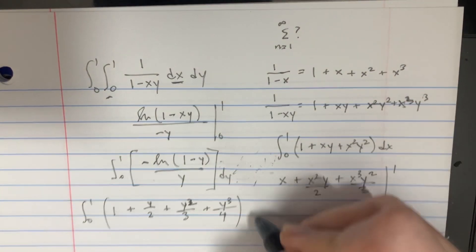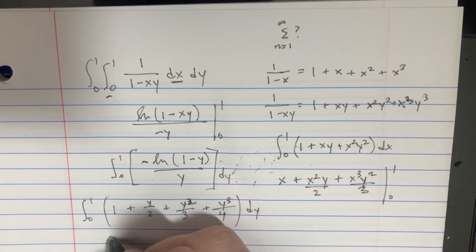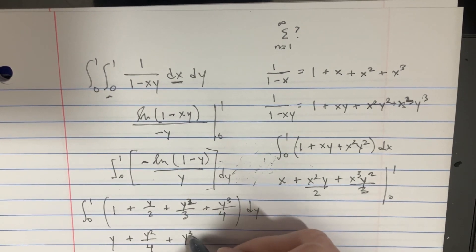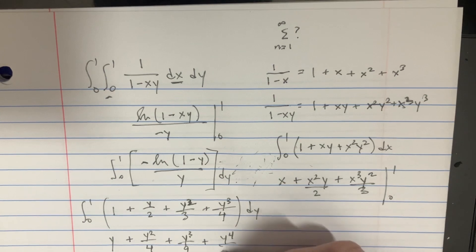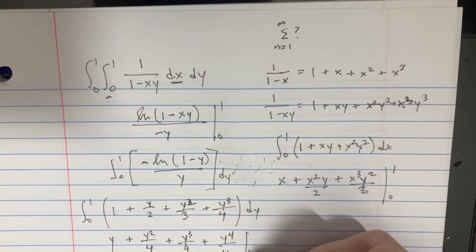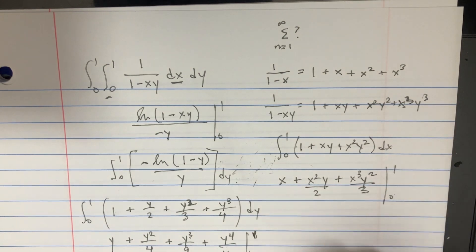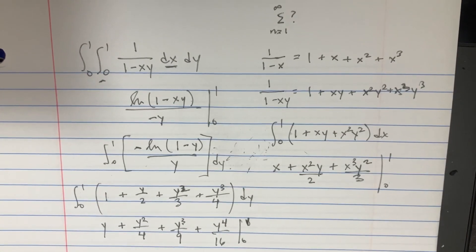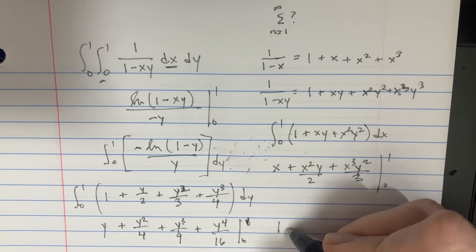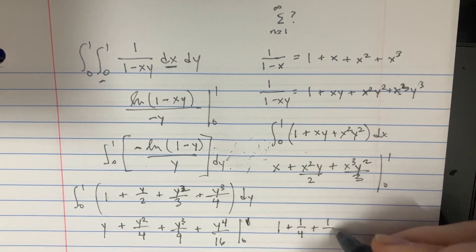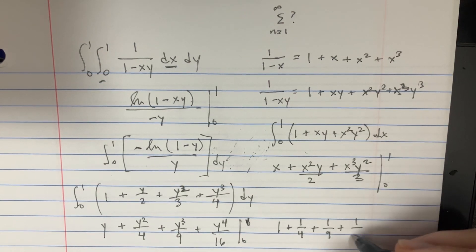Let's go integrate this from 0 to 1 in terms of dy. So that's just going to be y plus y squared over 4 plus y to the third over 9 plus y to the fourth over 16 from 0 to 1.